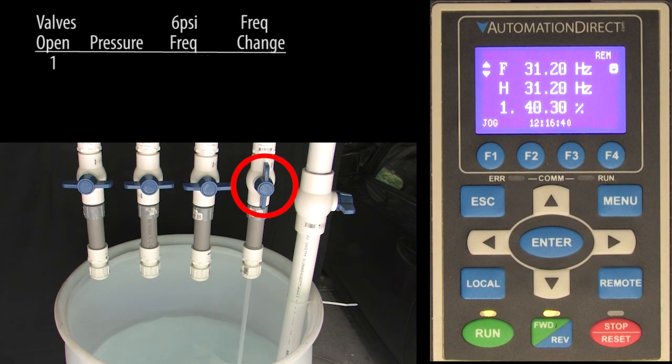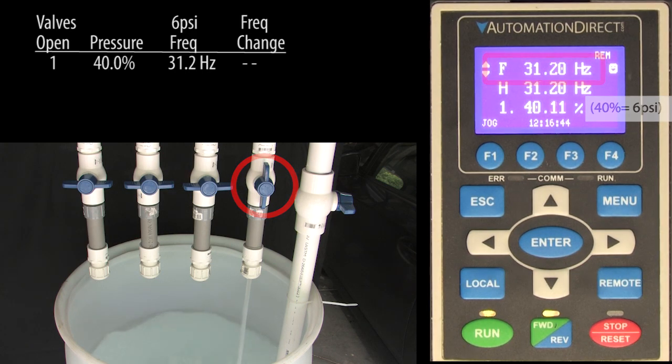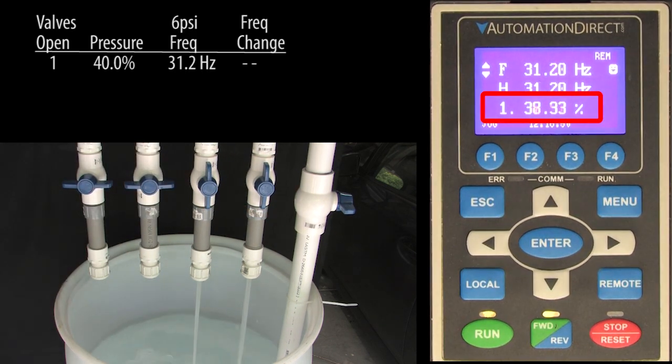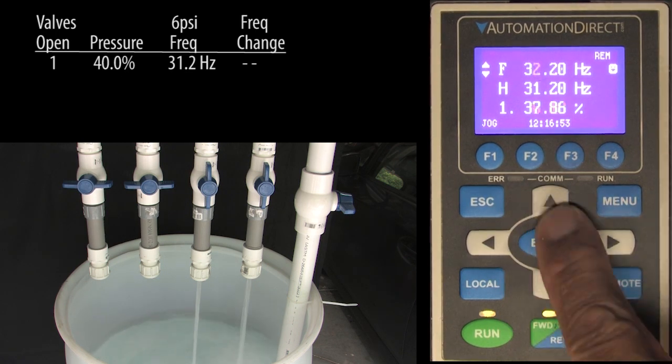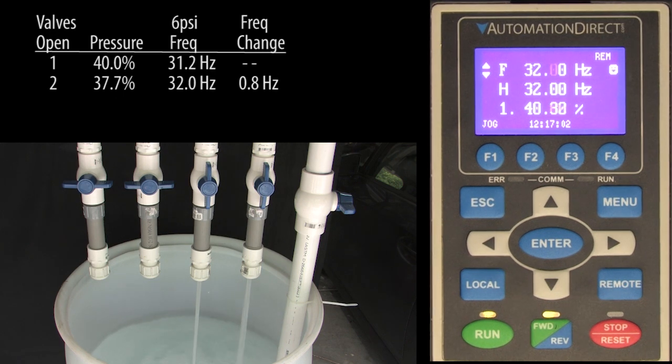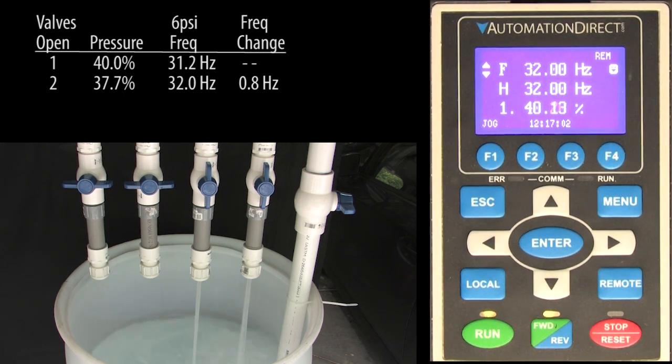So with one valve open, we need this much drive frequency to get 6 psi. If we open the second valve, we see the pressure drop to this. So we increase the drive frequency to get our 6 psi back and add that to the chart. Let's also add how much we had to change the frequency to get our pressure back.